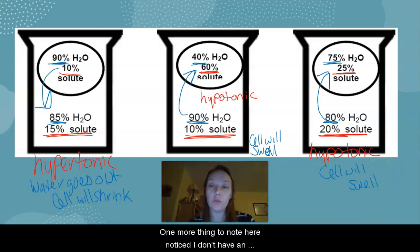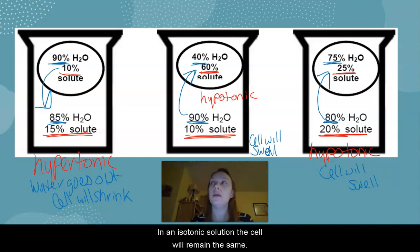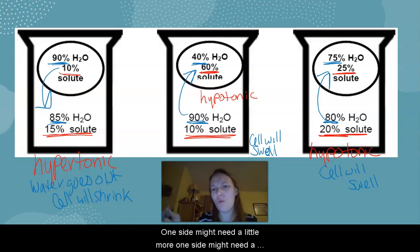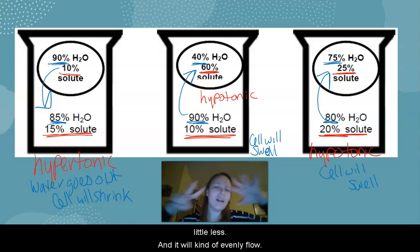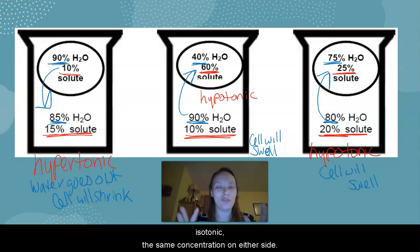One more thing to note here, notice I don't have an isotonic example in here. In an isotonic solution, the cell will remain the same. This doesn't mean no movement, it just means that it will move in and out equally. One side might need a little more, one side might need a little less, and it will kind of evenly flow in and out, just as need be, very much an equilibrium scenario, because it is isotonic, it's the same concentration on either side.